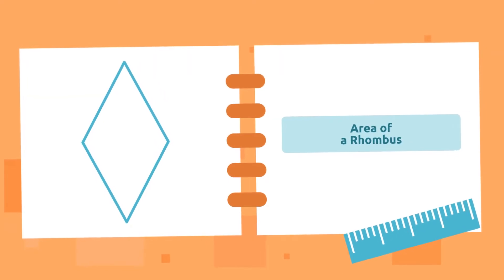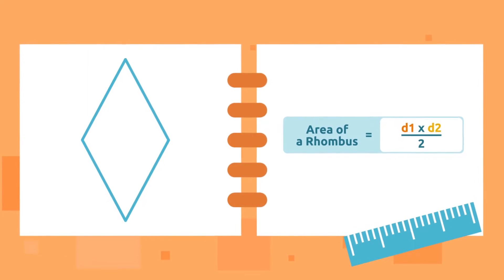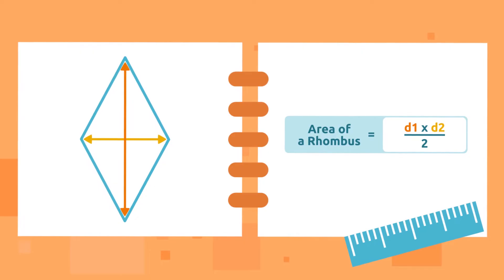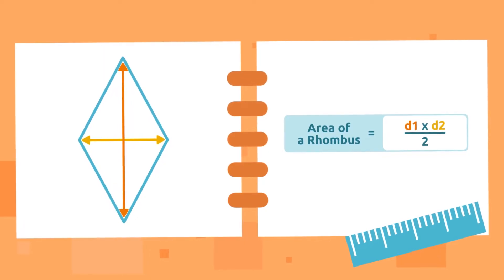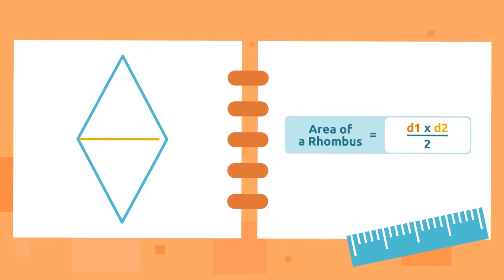The area of a rhombus is equal to the first diagonal times the second diagonal divided by 2. Diagonals are lines that go from one vertex to another vertex.